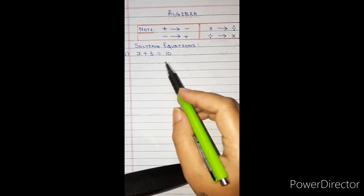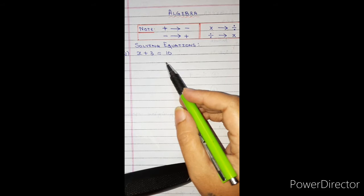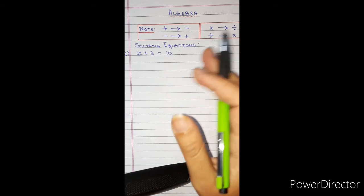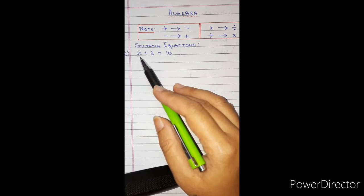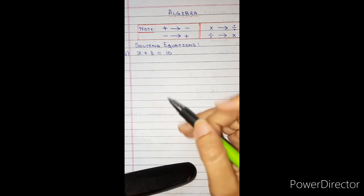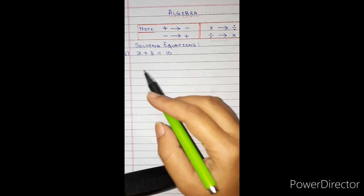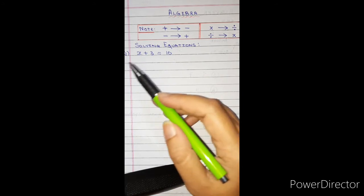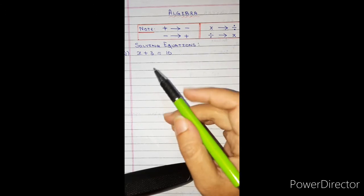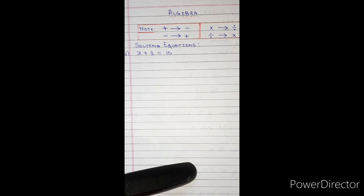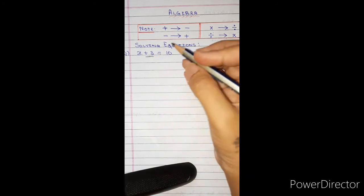We have x + 3 = 10. What we are going to do is bring the numbers together and leave the variable on one side, so we get the value of x. Equations are solved to find the value of the variable — we don't know what x is, so that's why we solve. Here, plus 3 will move to the right hand side.